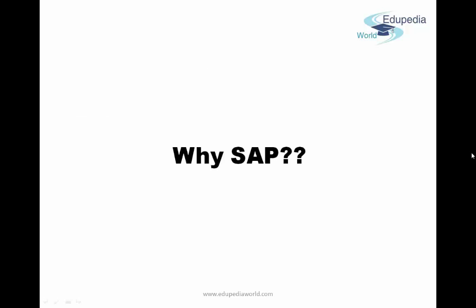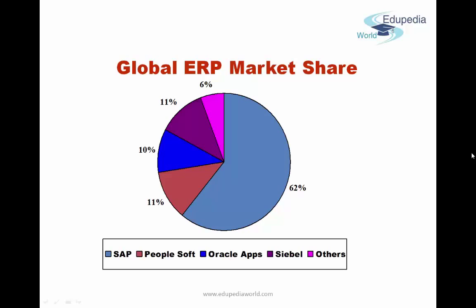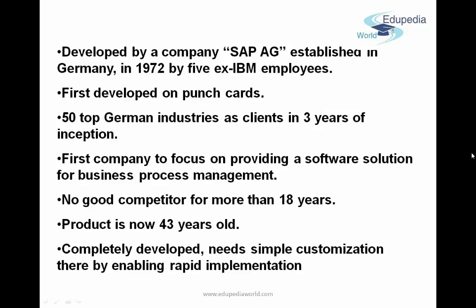There are many ERPs available — Baan, Oracle Apps, Navision, PeopleSoft, MMG Pro, Orion, and SAP. Most of these have been taken over by larger companies or no longer exist — PeopleSoft was acquired by Oracle, and Navision by Microsoft. SAP is the world's largest ERP software company and also the oldest. SAP AG was established in Germany in 1972 by five ex-IBM employees, first developed on punch cards, and 50 top German companies became clients within the first three years.